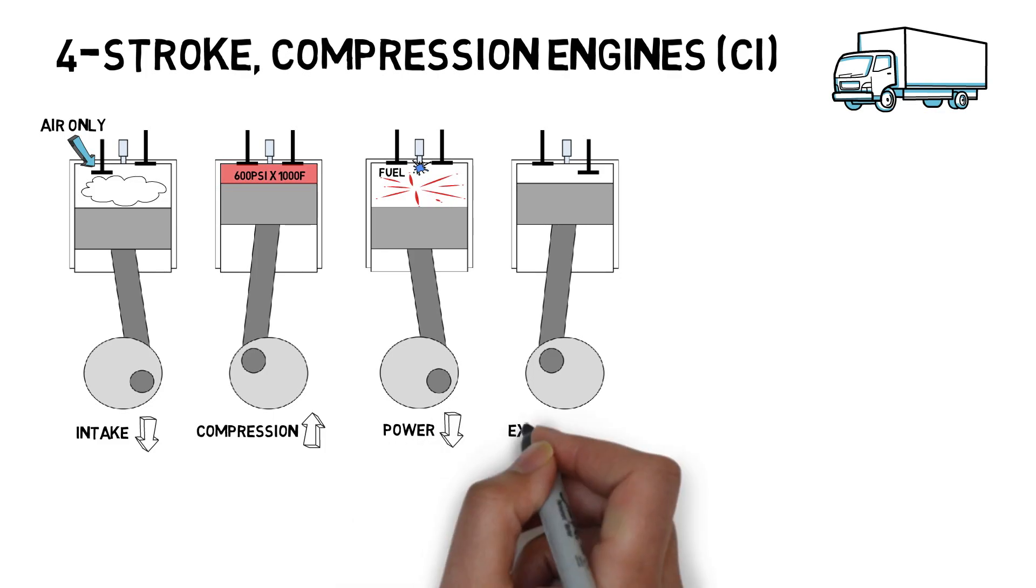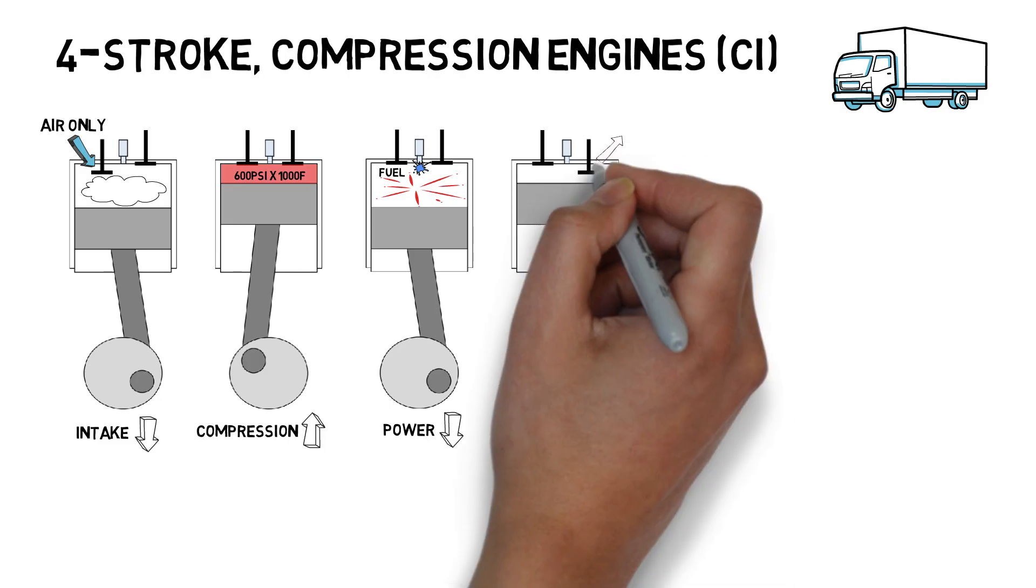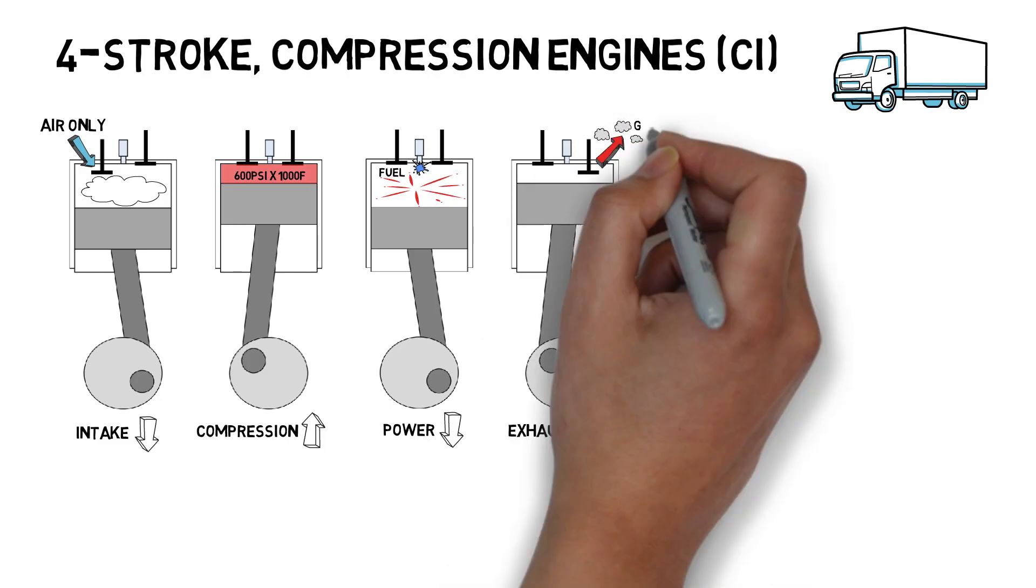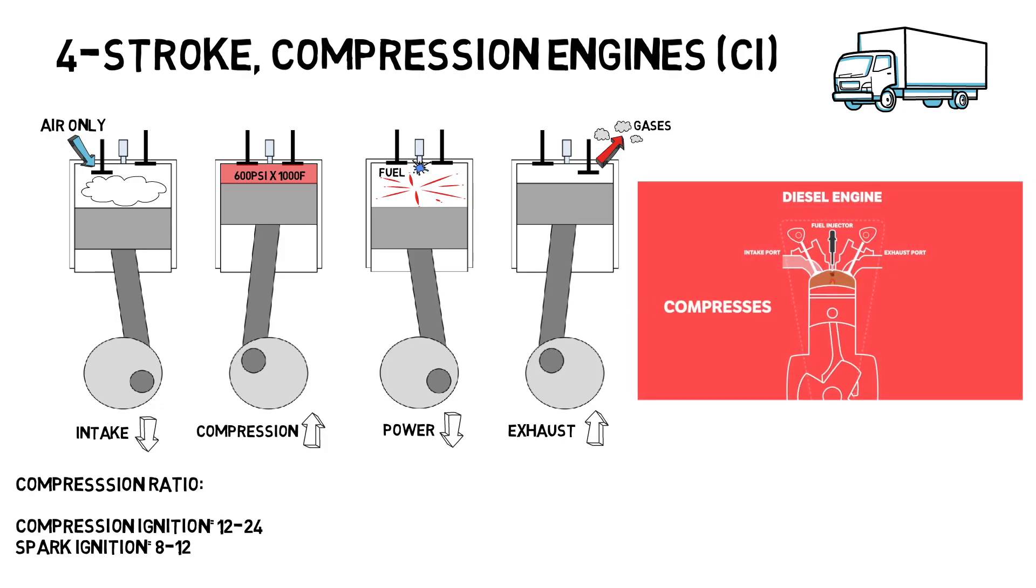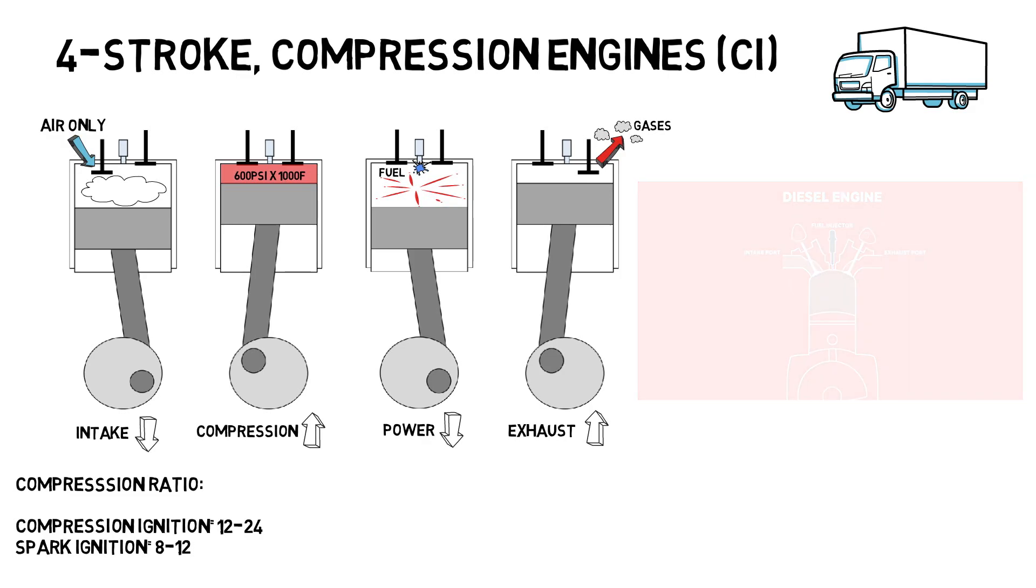The exhaust stroke is similar to that of spark ignition engines where the rising piston ejects the gases. Since combustion is started by pressure rather than by a spark plug, compression ratios are considerably higher than gasoline engines. They typically vary from 12 to 24 rather than 8 to 12. Compression ratio is the volume of the cylinder with the piston at bottom center over the volume of the combustion chamber with the piston at top center.